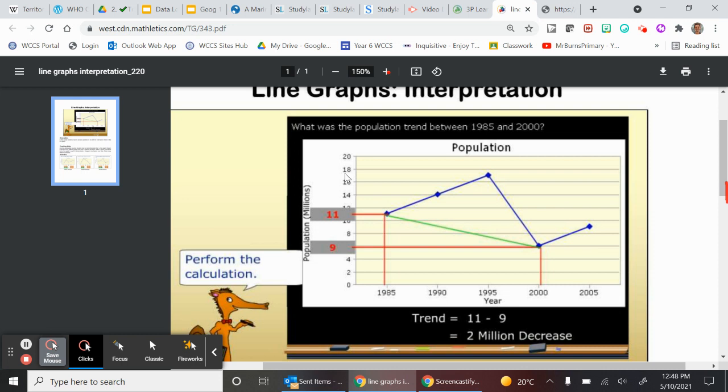Let's pretend that in 1985, 11 million people lived in Australia because it says 11 there, doesn't it?